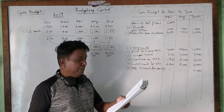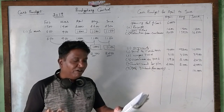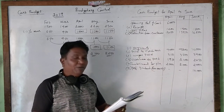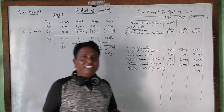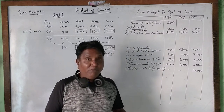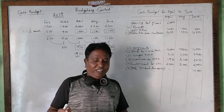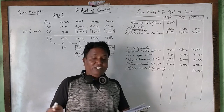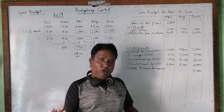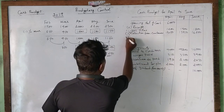Next adjustment: an advance of 9,000 rupees is to be received from the sale of a vehicle in June. So 9,000 rupees advance will be received in June.